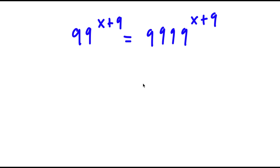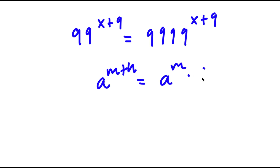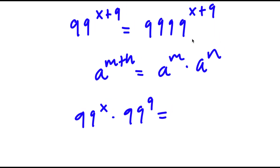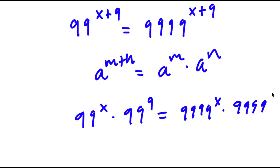In this problem, I have 99 to the power of x plus 9 is equal to 9999 to the power of x plus 9. To solve this, I'm going to use the property of exponents that says a to the power of m plus n equals a to the power of m times a to the power of n. So 99 to the power of x plus 9 equals 99 to the power of x times 99 to the power of 9, and 9999 to the power of x plus 9 equals 9999 to the power of x times 9999 to the power of 9.